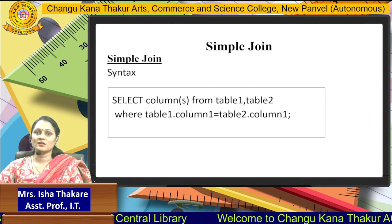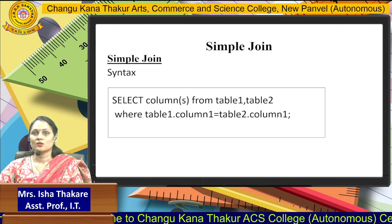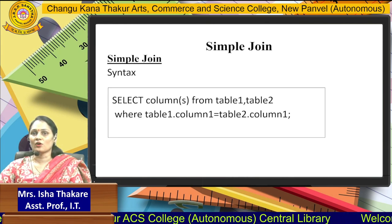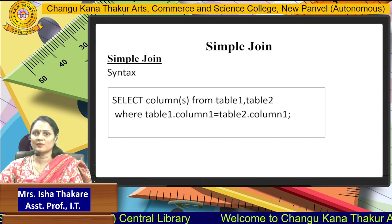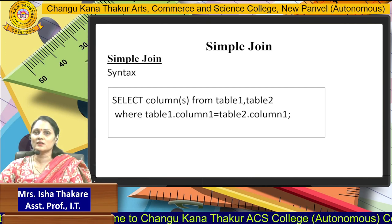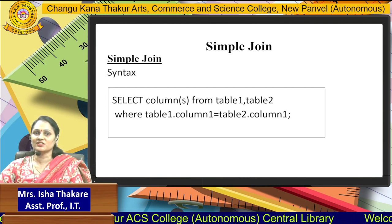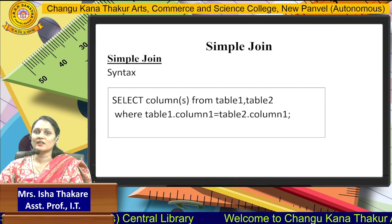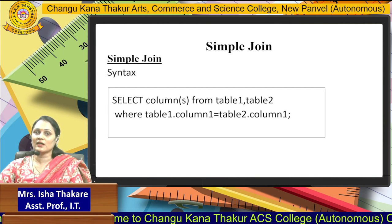This is the syntax for creating a simple join. The SELECT statement is used: SELECT columns from table1, table2, WHERE table1.column1 equals table2.column1 — this is the join condition. Column1 is common in both tables, and we can join the two tables only when at least one column is common in both.